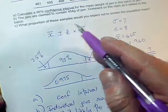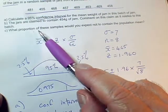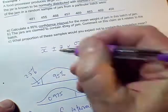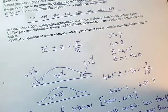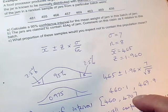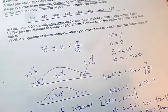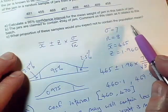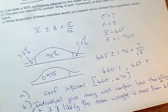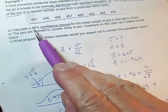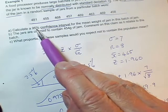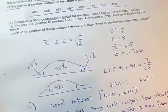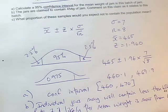And then part C, now part C, I'm afraid this doesn't make any sense as it's expressed at the moment. What proportion of these samples, well there is any one sample given, would you expect not to contain the population mean? I think this question is trying to say, for many samples, if many samples were taken and a confidence interval were calculated each time, what proportion of the time would we expect the confidence interval not to contain the population mean? And if that's what the question means, how often would we expect the confidence interval we've got to actually not succeed in capturing the mean? Because it's a 95% confidence interval, I think it's probably intending us to say that 5% of the time, in other words 0.05 of the time, our confidence interval from a given sample would not actually contain the population mean.